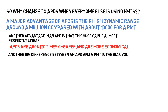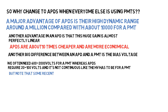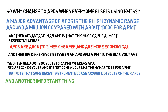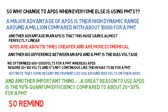Another big difference between an APD and a PMT is the bias voltage. We often need 600 to 2,000 volts for a PMT, whereas many APDs require only 20 to 100 volts, and it's not continuous like the high voltage has to be for a PMT. Although some APDs in some instruments use around 1,000 volts. Another great reason to use APDs is their almost 90% quantum efficiency, compared to maybe 20 or 30% for a PMT.